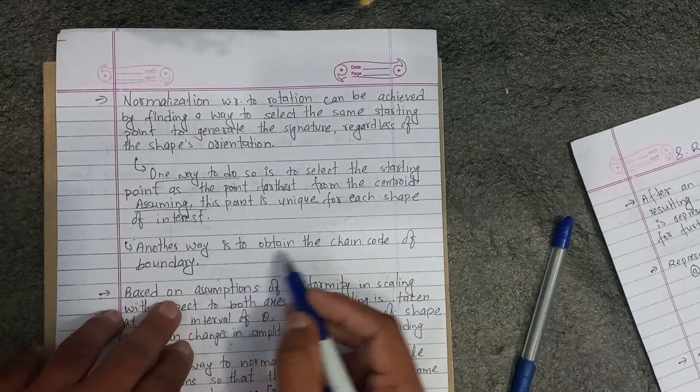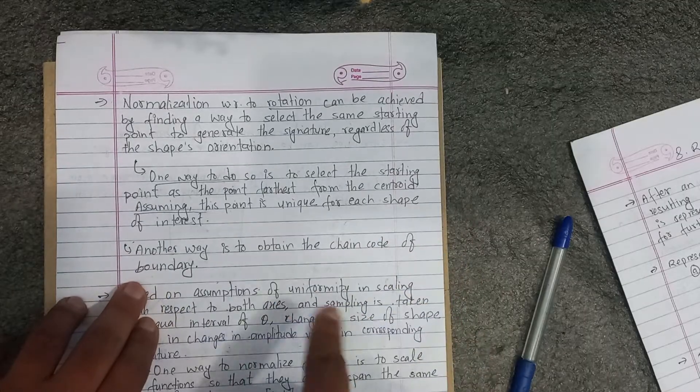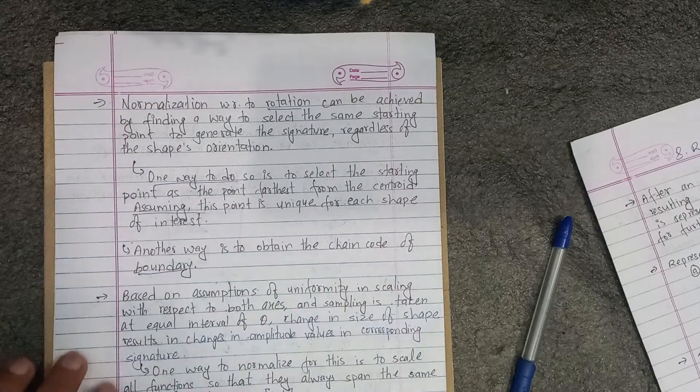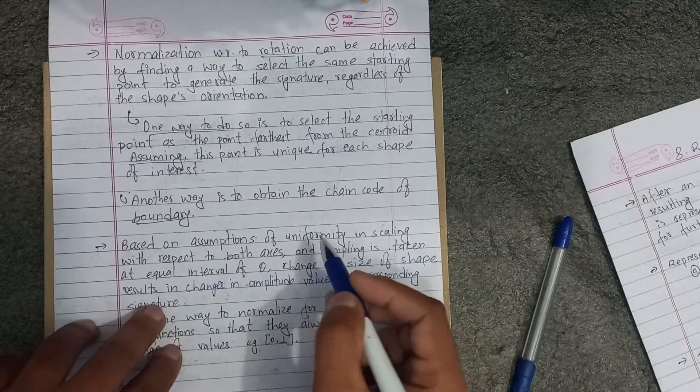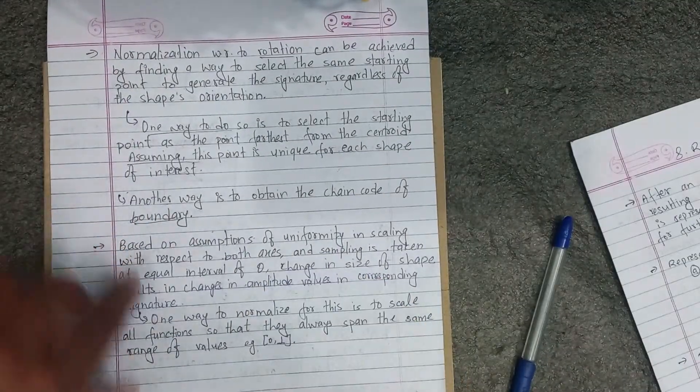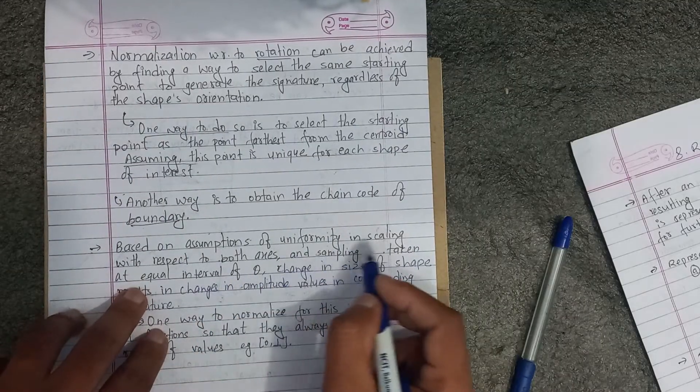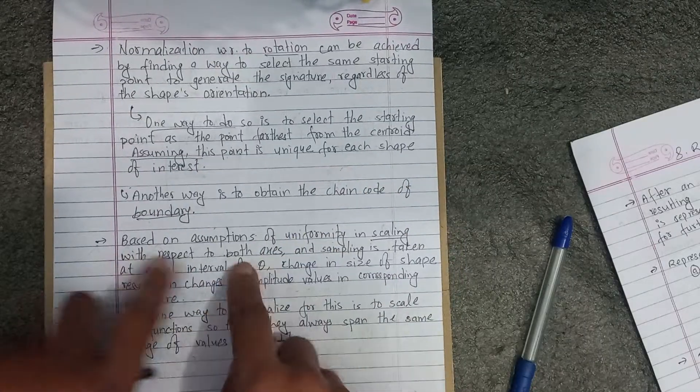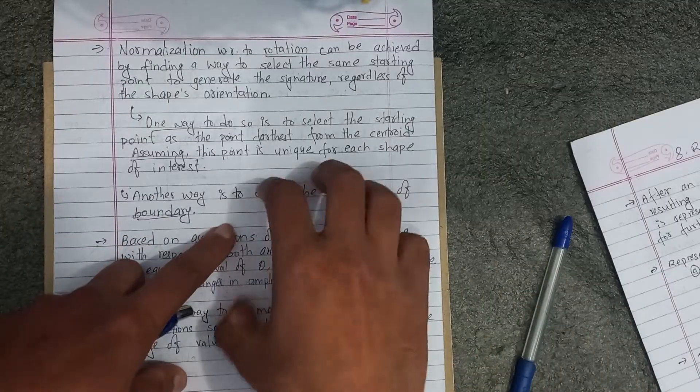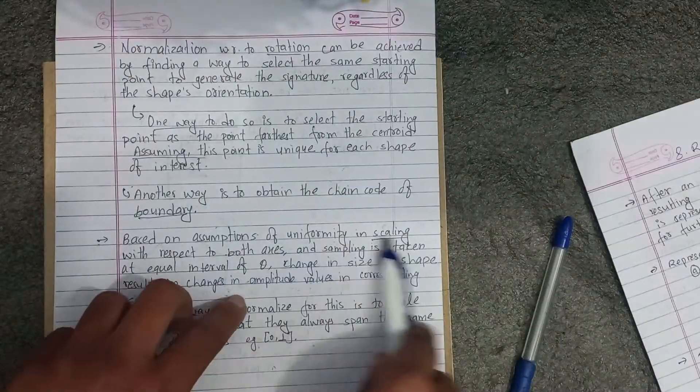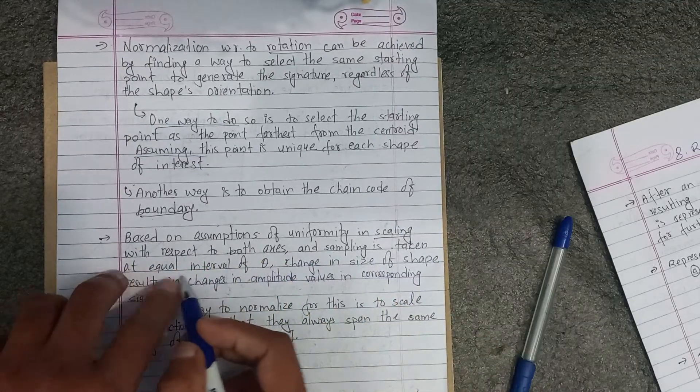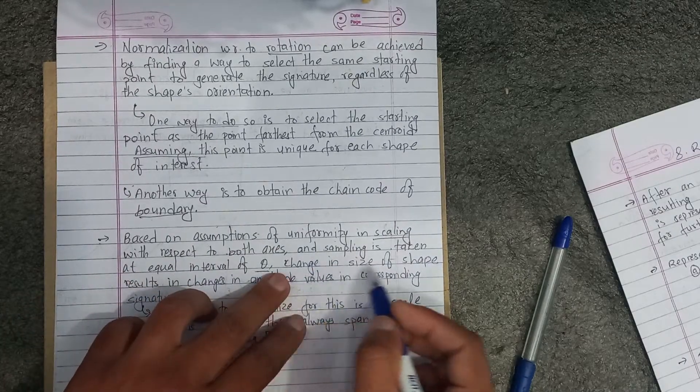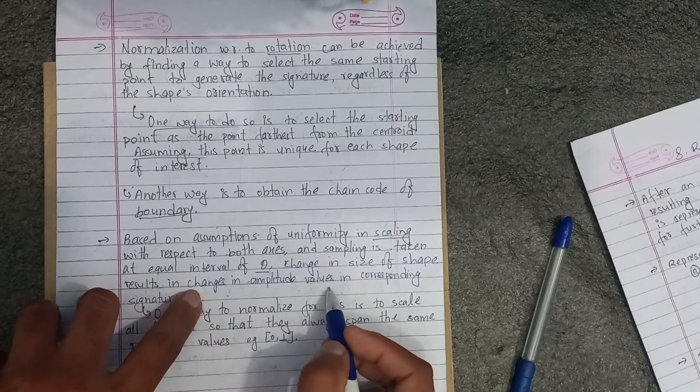Another way is to obtain the chain code of boundary. Sampling is taken at equal intervals of theta.